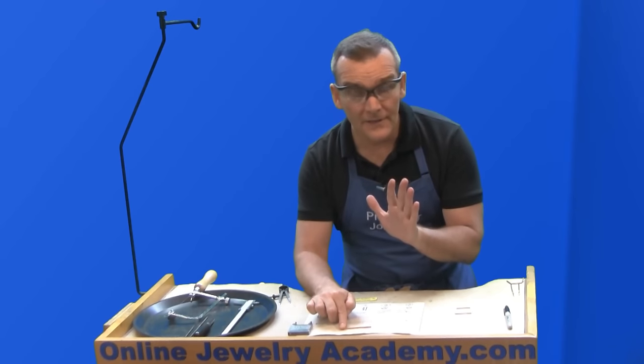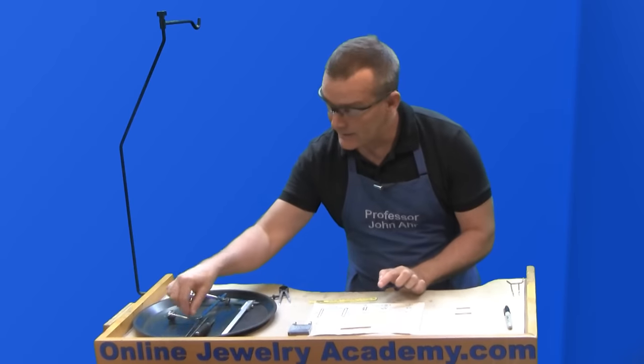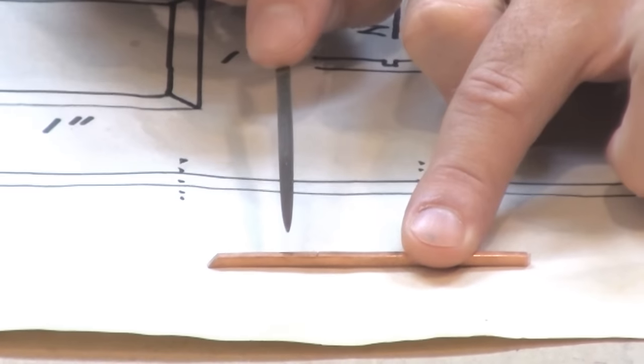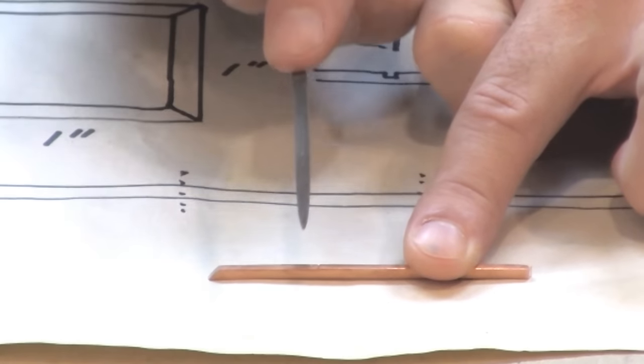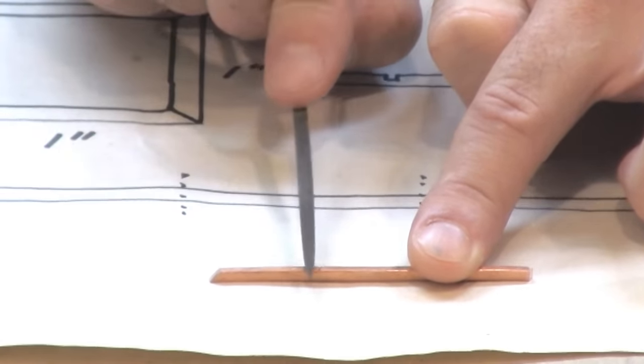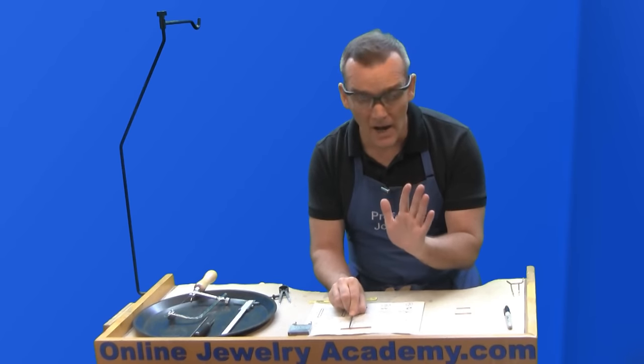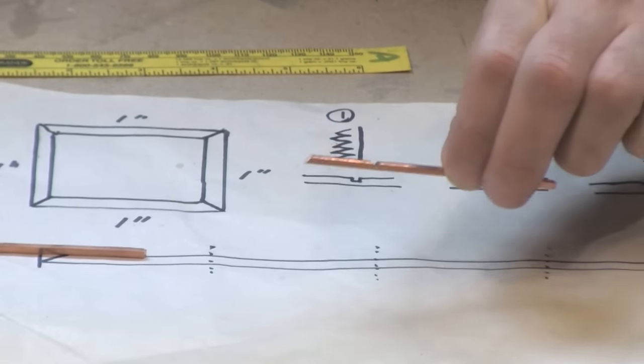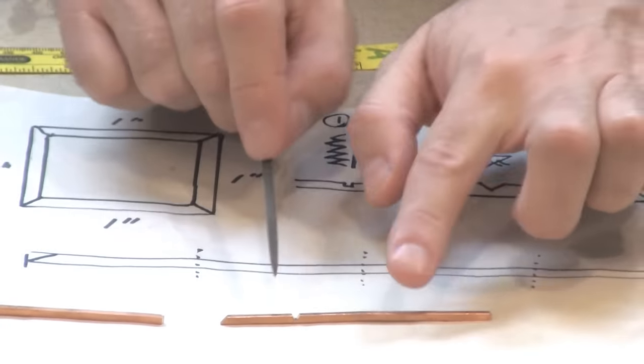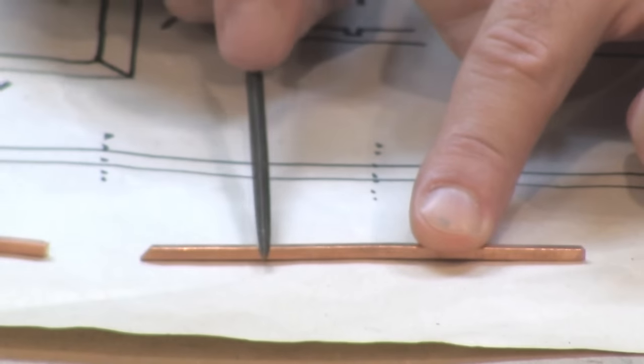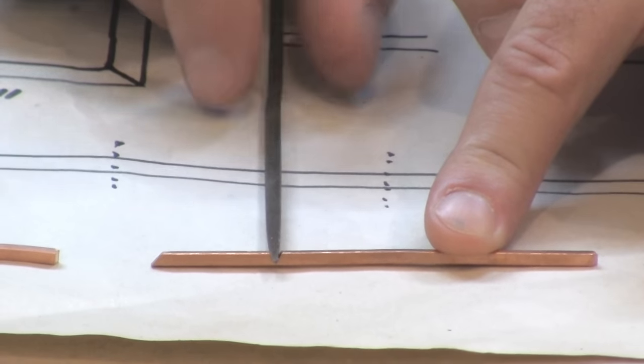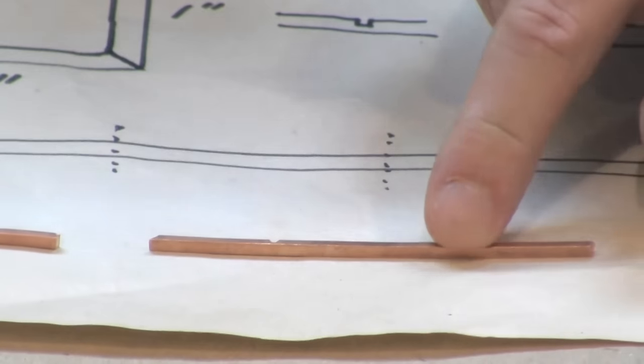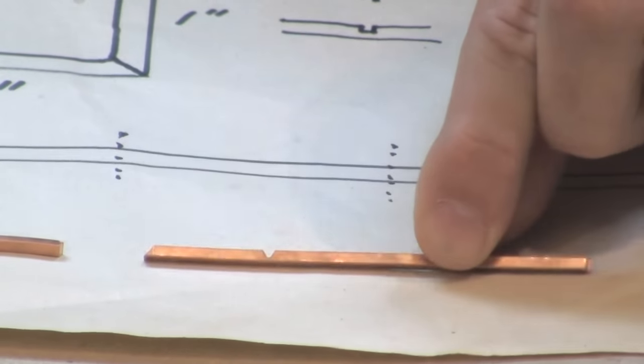So once you've done that, then you're ready to pick up your triangle file and using that notch as a guide, you're just going to file in a straight line. Now, I'm not going to make you watch me file. So I've already prepped another piece right here. And you can see that I've used the triangle file. It fits in perfectly into this notch. But you can see I've removed the bulk of the material from this joint.